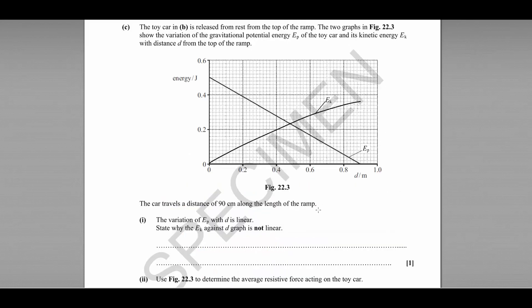Part C shows us this toy car. It's been released from rest from the top of the ramp. And we have graphs representing the potential energy of the car decreasing and the kinetic energy of the car increasing. It travels a total of 90 centimeters along the ramps. You can see that here. D is 0.9. That's the end of the journey. There's no more potential energy.